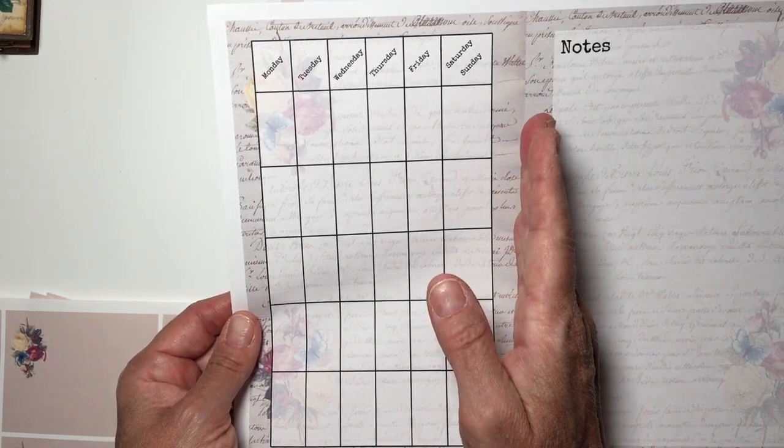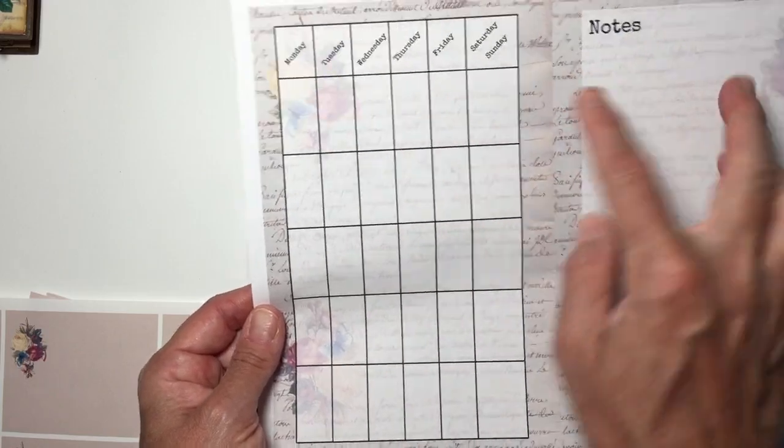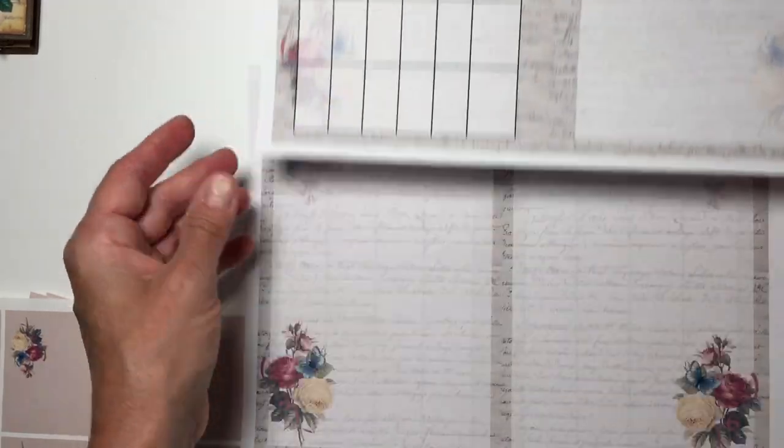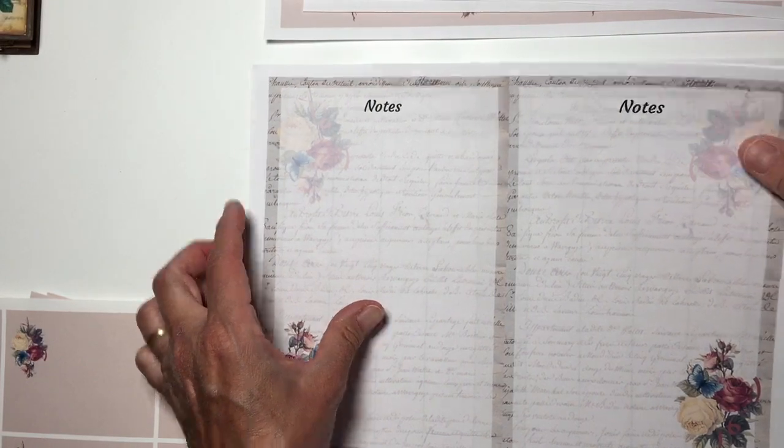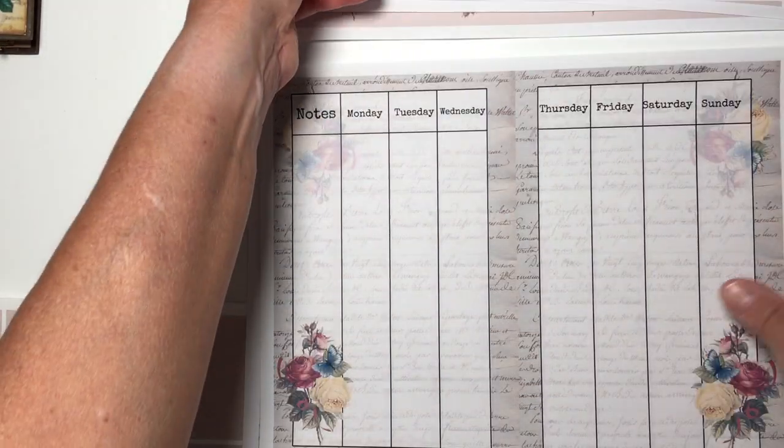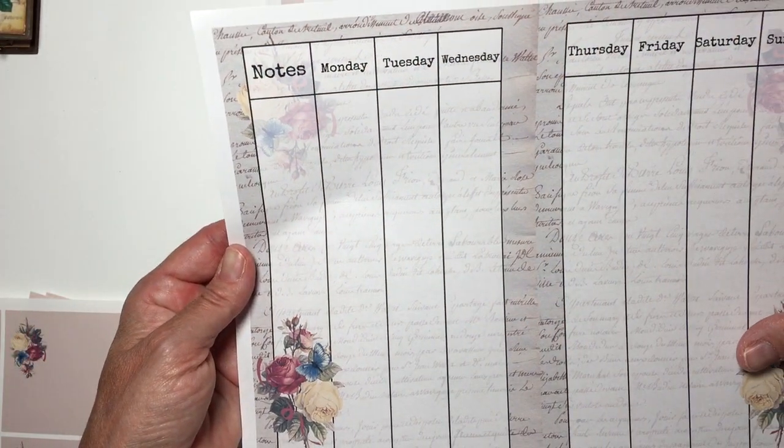For example, you could do pages like this, and what's really cool is when you stack these up and sew them as signatures. You could do just notes, maybe you just want to create a journal that has notes. This is one where you have more space.